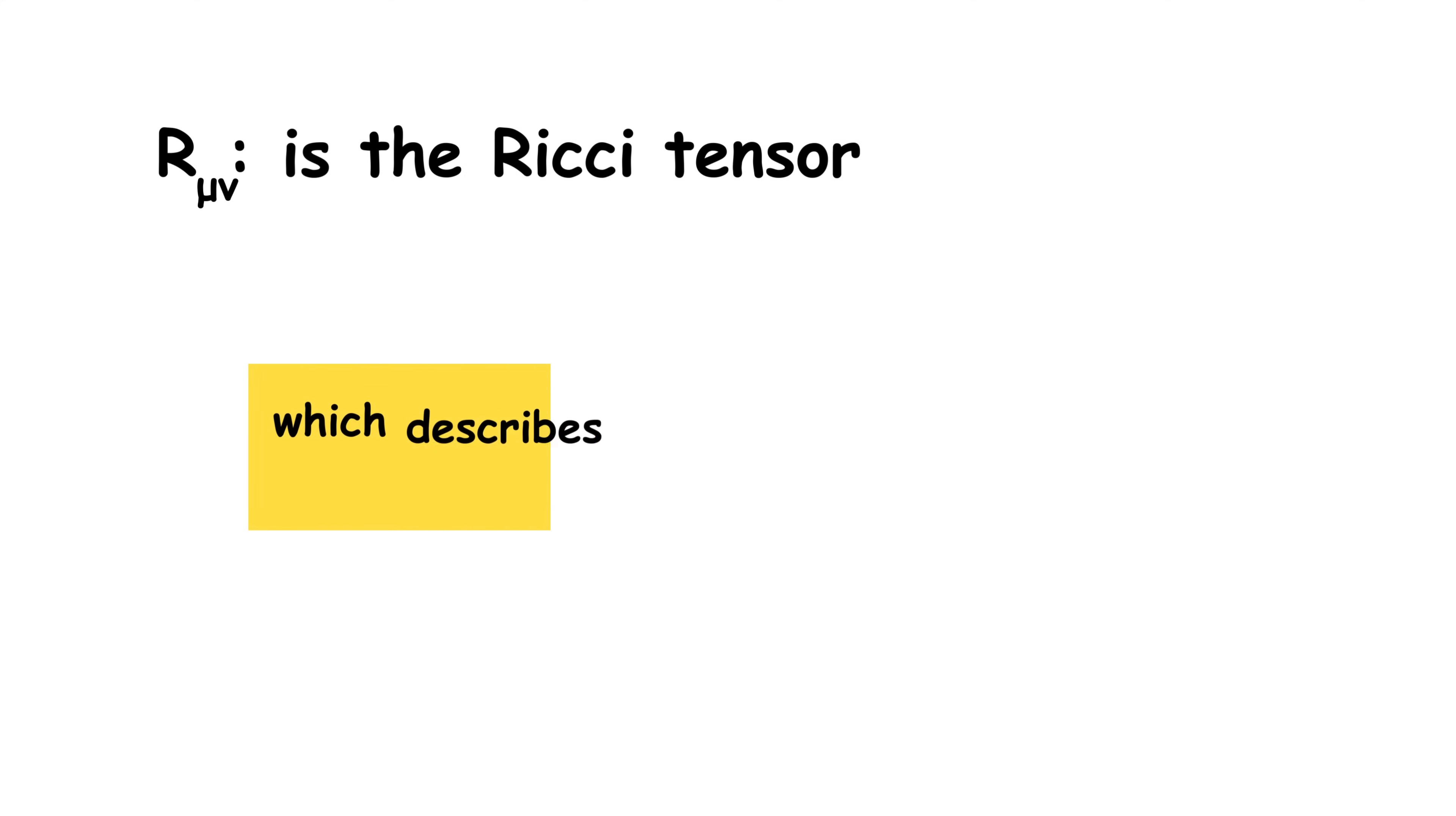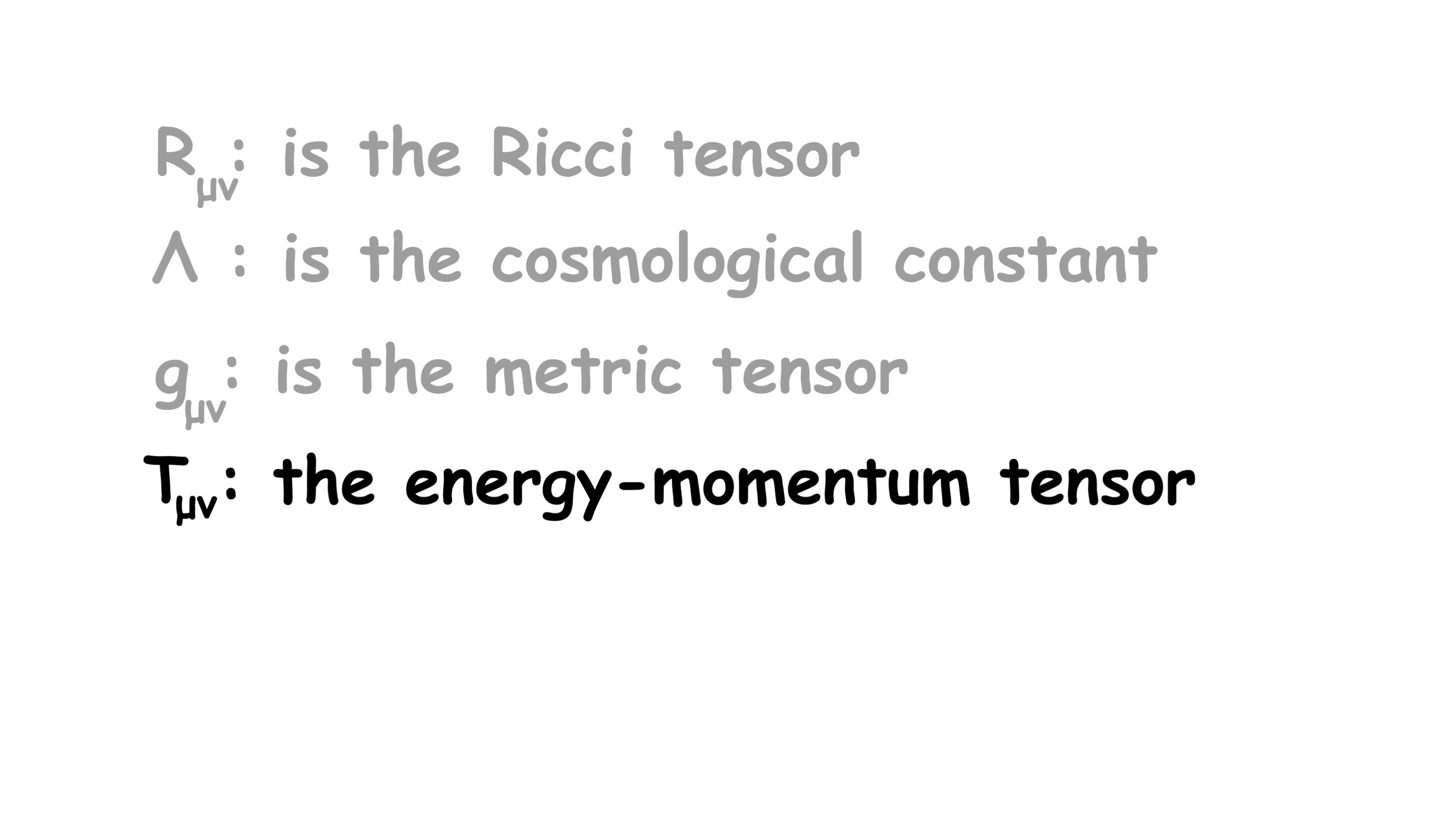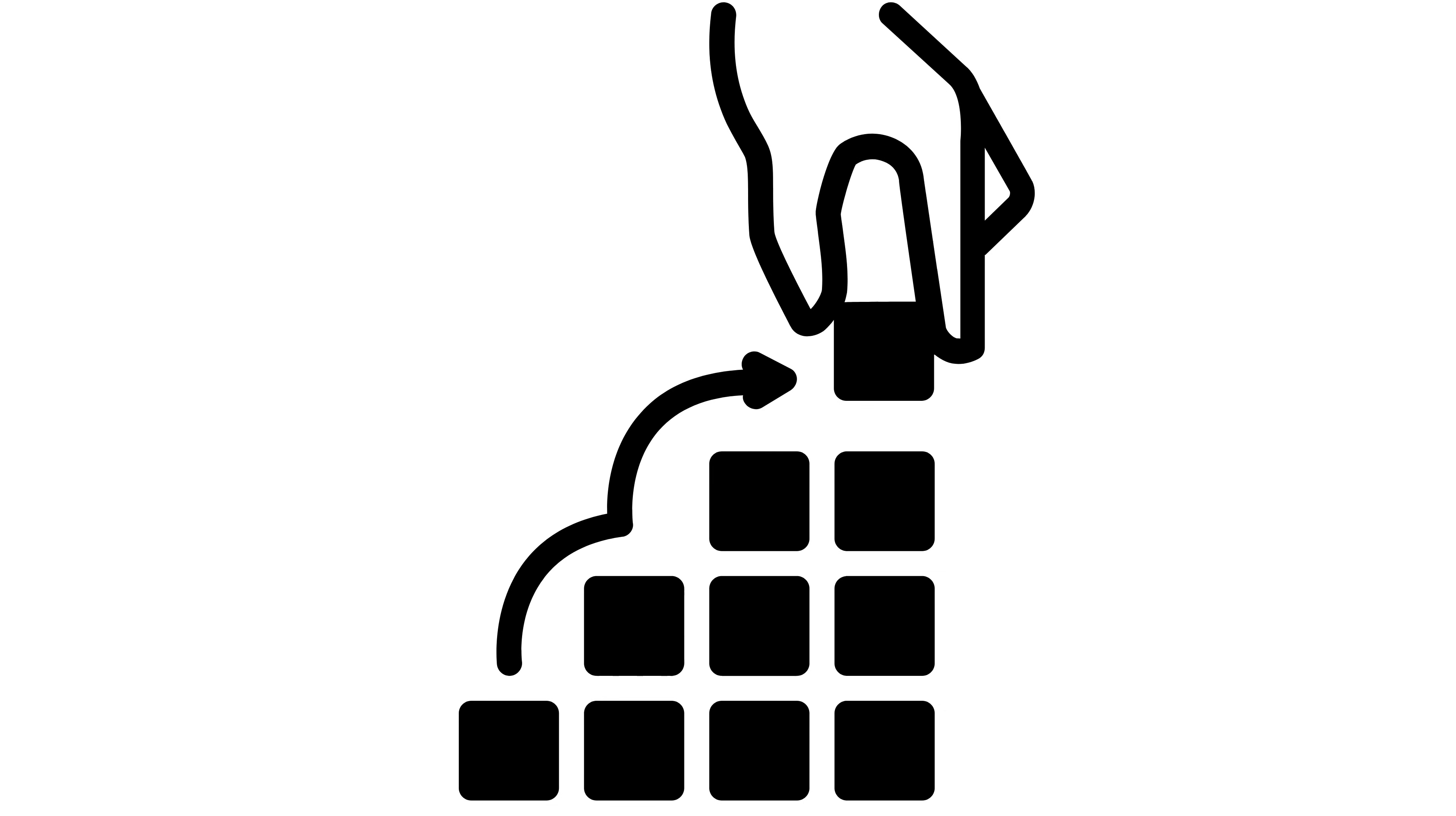Einstein's field equation expresses this idea. Here, R mu nu is the Ricci tensor, which describes the curvature of space-time in a specific direction. R is the scalar curvature. Capital Lambda is the cosmological constant, which explains the accelerated expansion of the universe. G mu nu is the metric tensor. T mu nu, the energy momentum tensor. G the gravitational constant, and C the speed of light. The formulation predicted phenomena such as the bending of light by gravity, which was experimentally confirmed in 1919. The theory not only catapulted Einstein to worldwide fame, but also became one of the fundamental foundations of modern physics.